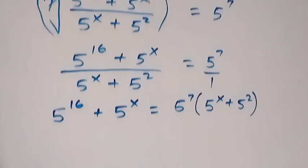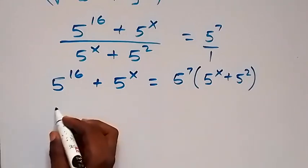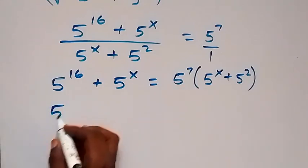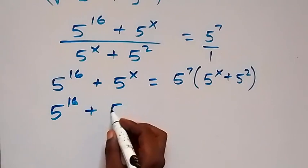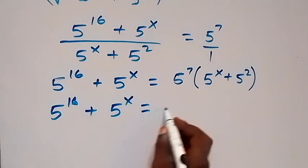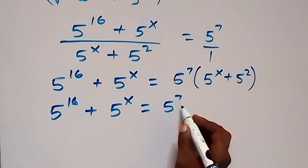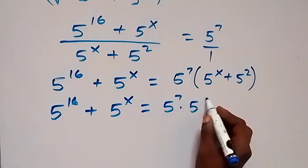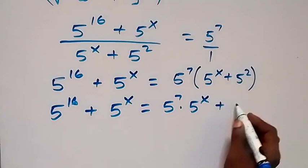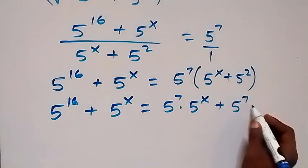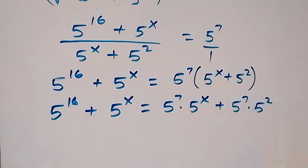Expanding the right side: 5 raised to power 16 plus 5 raised to power x equals 5 raised to power 7 times 5 raised to power x, plus 5 raised to power 7 times 5 squared.